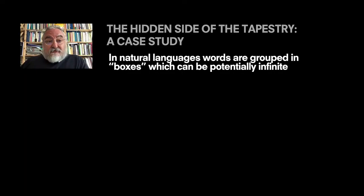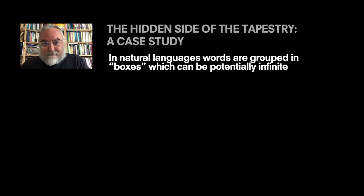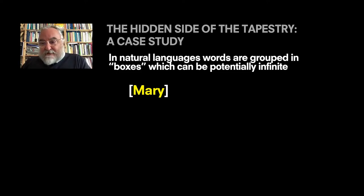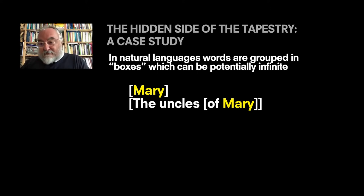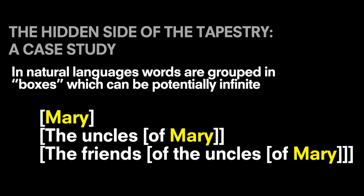I would like to highlight, with a short simple case study, one of the core aspects — probably the core aspect — of all and only human languages. In natural languages, words are grouped in boxes, which can be potentially infinite. If I take Mary, just a proper name, that Mary can be embedded in a box. You could say 'the uncles of Mary.' The big box is 'the uncles' and Mary is inside. And that can be done infinitely — 'the friends of the uncles of Mary,' 'the fathers of the friends of the uncles of Mary,' and so on.